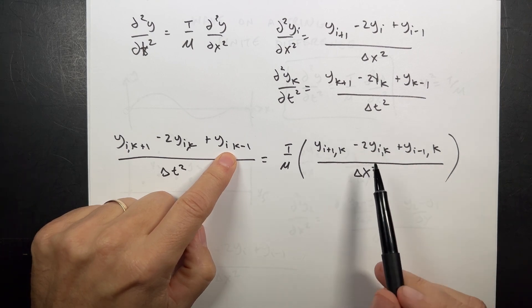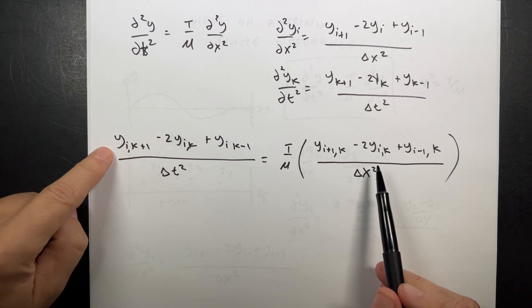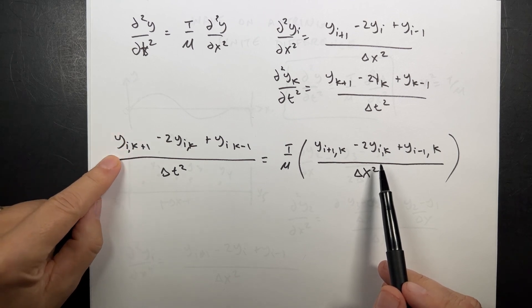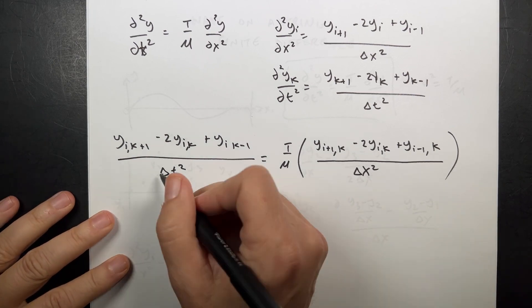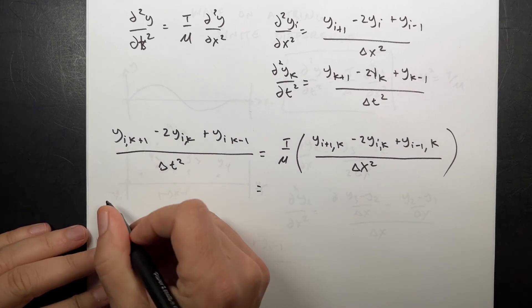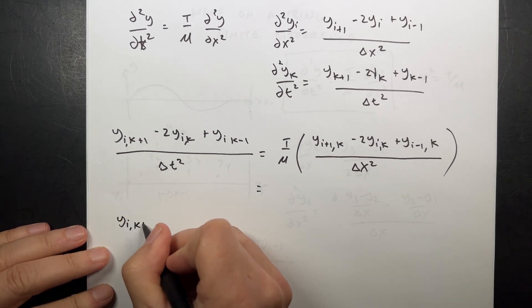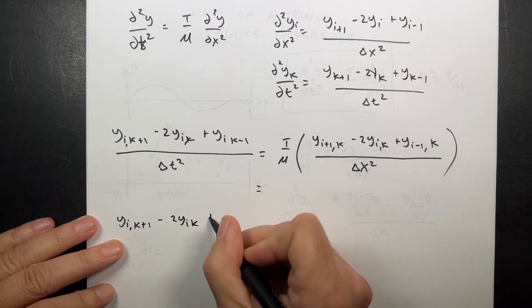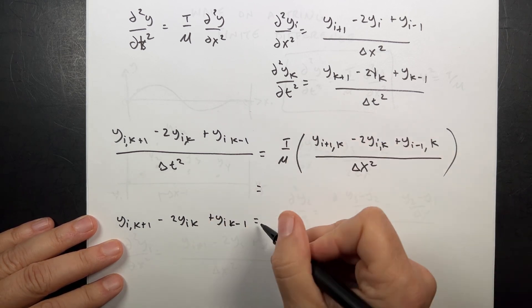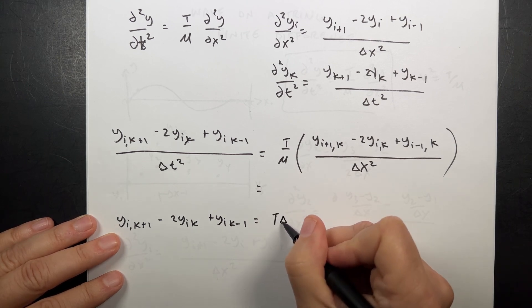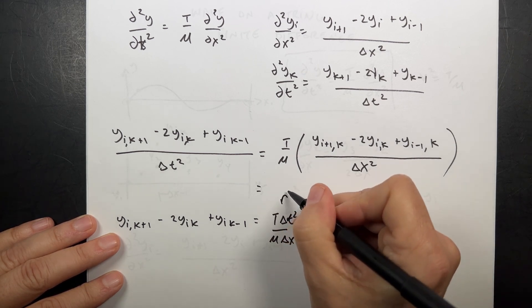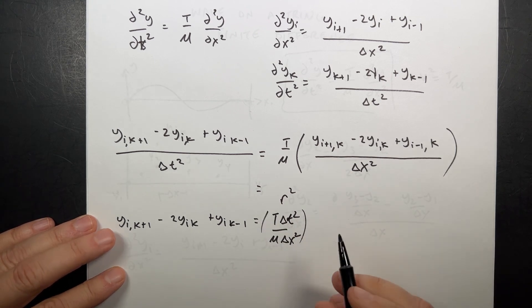Looking at the time terms: k+1 is the position in the future, k is now, and k-1 is the past. The right-hand side terms are all at the current time k. I only have one y_i,k+1 — the new position in the future — so I want to solve for y_i,k+1. I'm going to multiply both sides by delta t squared, and define r squared as T times delta t squared over (mu times delta x squared), so no one has to write that full expression repeatedly.